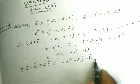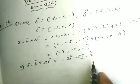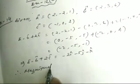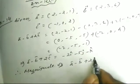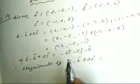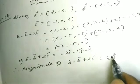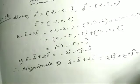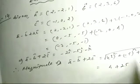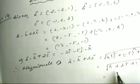Therefore, the magnitude of a vector minus b vector plus 2c vector is equal to the square root of (-2)² plus (-5)² plus (-1)², which is square root of 4 plus 25 plus 1, equals square root of 30.